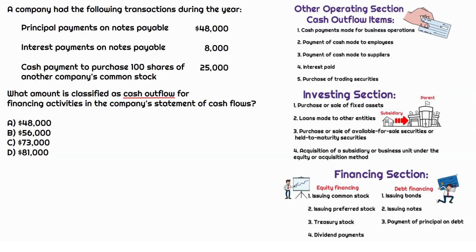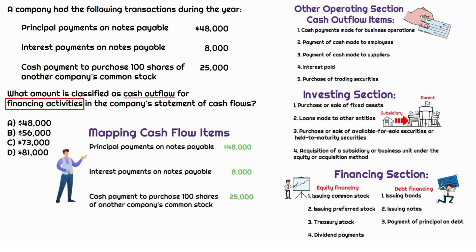Reading the last sentence: what amount is classified as cash outflow for financing activities in the company's statement of cash flows? There are three options — we'll run through each, categorize it, and see which items impact the financing section. Keep in mind there could be cash inflows from financing too, so we need to remember we're only focused on cash outflows. This is a key fact — if you don't pick that up and add both financing items together without checking the outflow requirement, you get it wrong. It's very important to read the full question.